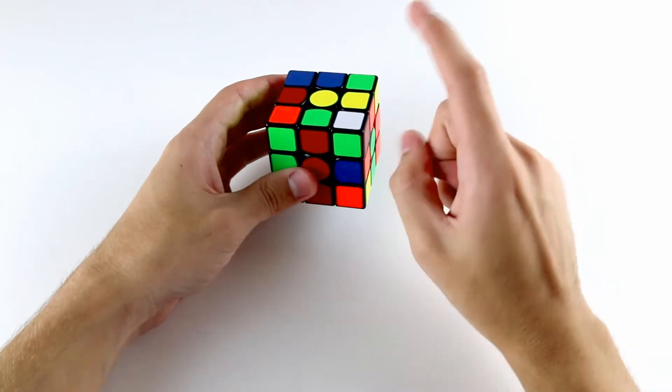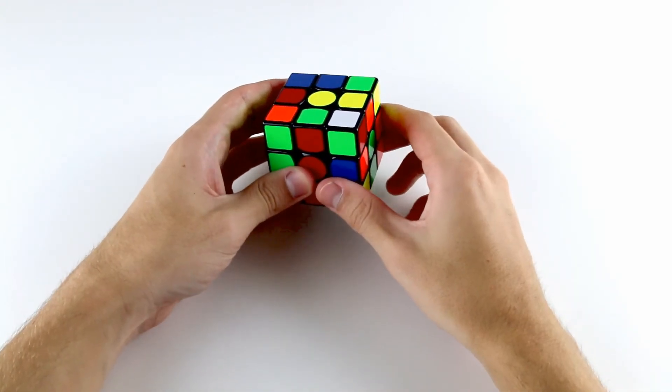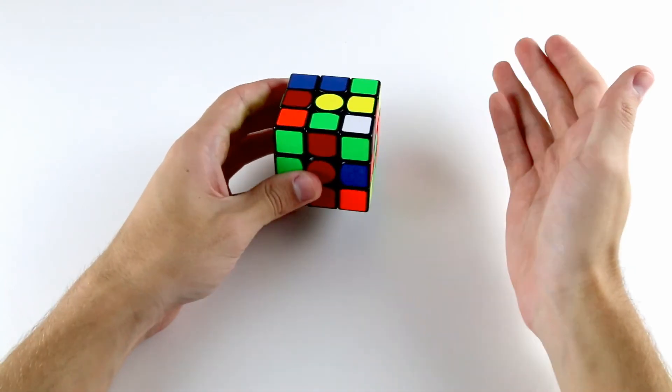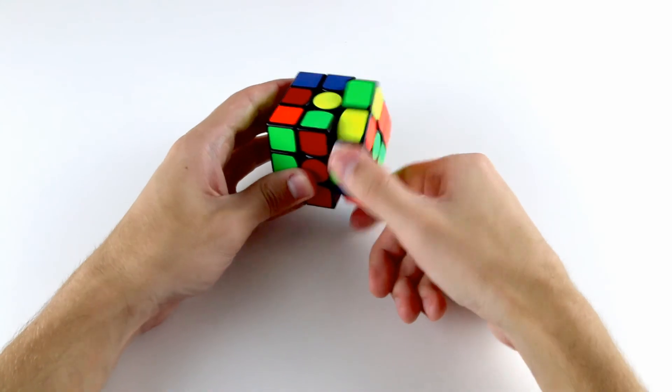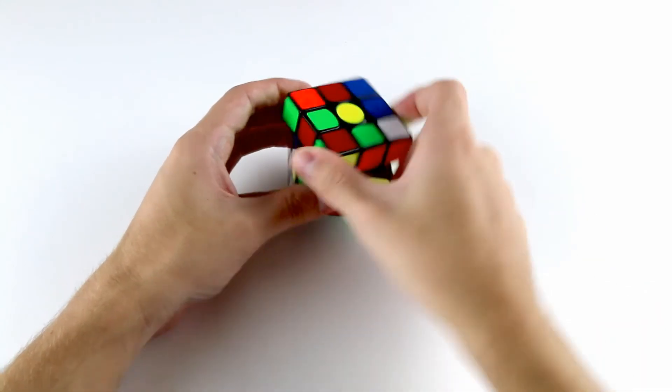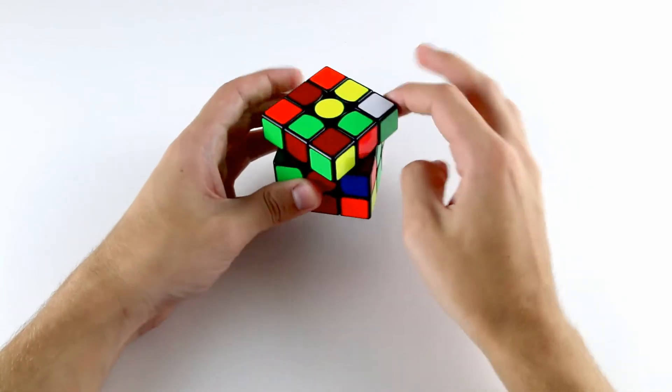Now we have this case where we have the white corner sticker facing upwards. Here the two pieces are connected to one another, so we need to find a way to split them up. We can hide the white corner like this, move the edge across, and then bring the corner back up to split up this edge and this corner.